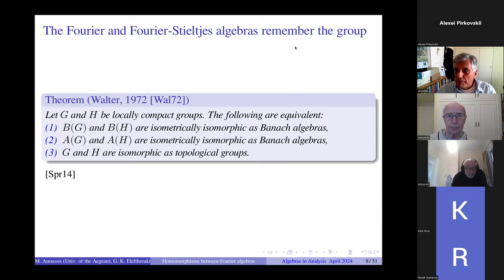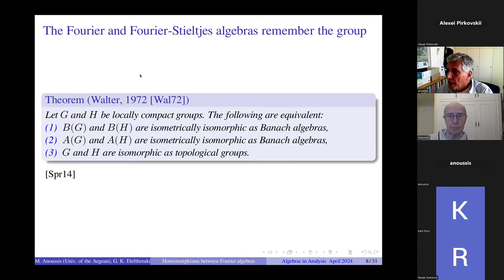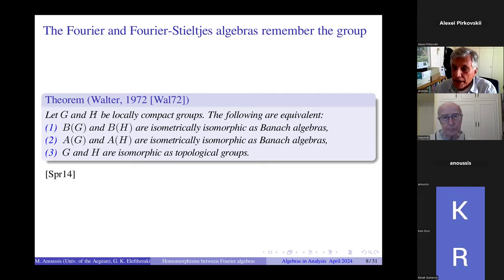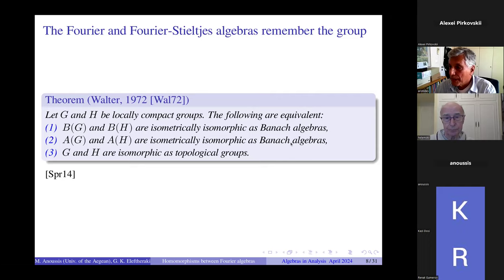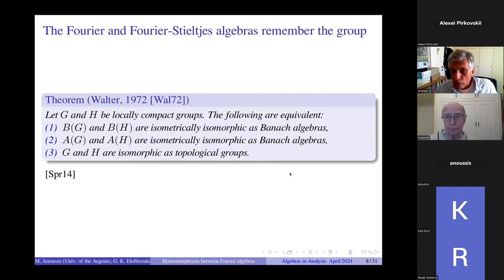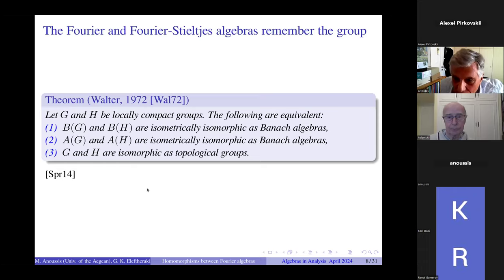One of the basic properties for which these algebras are interesting is the fact that they remember the group — a theorem proved by Walter in 1972. Walter proved that if you have two locally compact groups G and H, then the Fourier-Stieltjes algebras are isometrically isomorphic as Banach algebras if and only if the groups are isomorphic as topological groups, if and only if the Fourier algebras are isometrically isomorphic. All this material and much more is contained in lecture notes by Nikos Spronk.